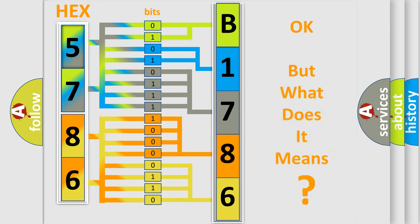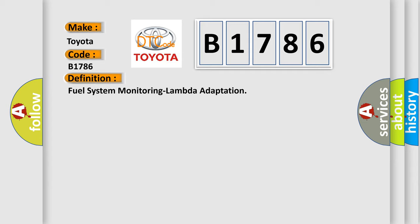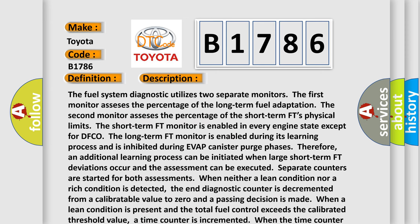The number itself does not make sense to us if we cannot assign information about what it actually expresses. So, what does the Diagnostic Trouble Code B1786 interpret specifically for Toyota car manufacturers? The basic definition is Fuel System Monitoring Lambda Adaptation. And now this is a short description of this DTC code.